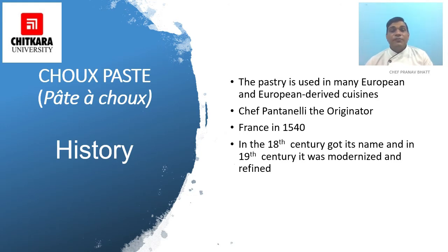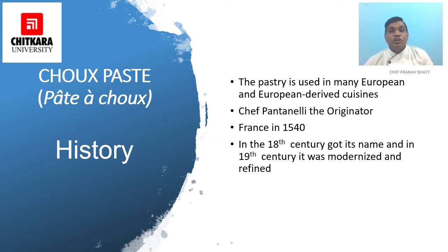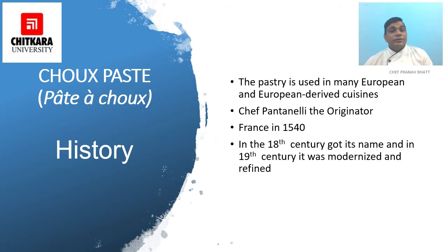The pastry later became known as pâte à Popelin, and poplins were a form of cake made in the Middle Ages in the shape of large puffs. It was perfected in the 18th century by chef Avice, who created what were then called choux buns. The dough's name changed to pâte à choux as Avice's buns resembled cabbages. Further refinement was introduced in the 19th century by master pastry chef Antonin Carême, and this recipe remains the same used today.